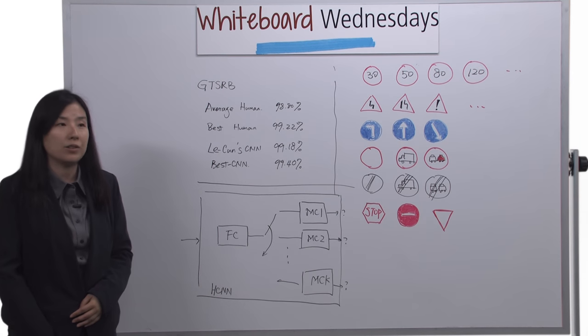one algorithm called LaQuinn's CNN could achieve 99.18%. Comparing to the best human, it's slightly worse.